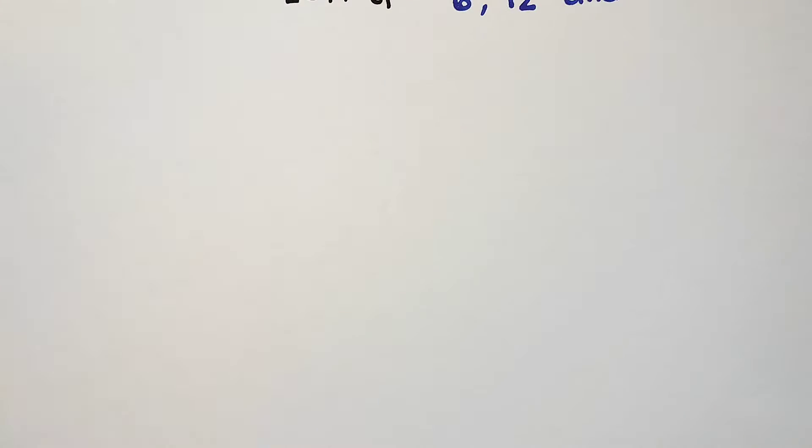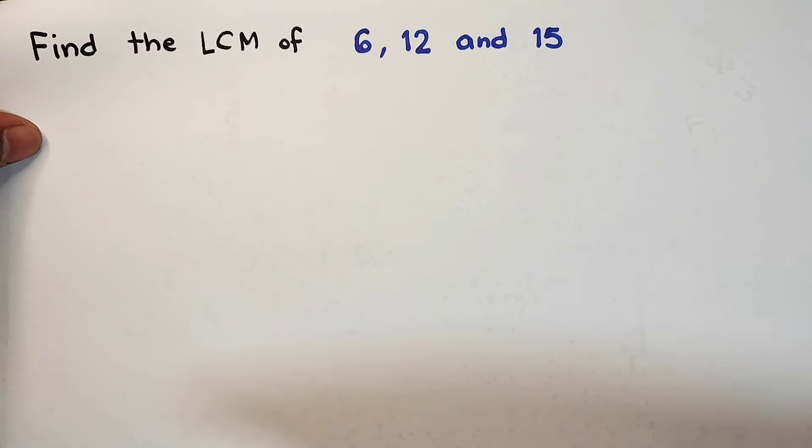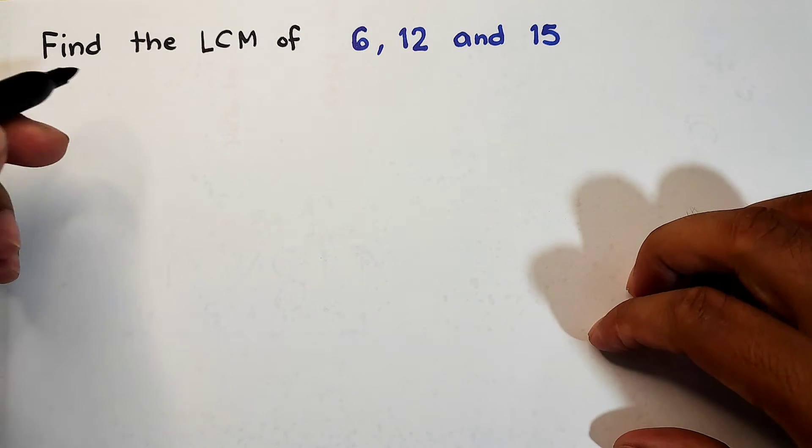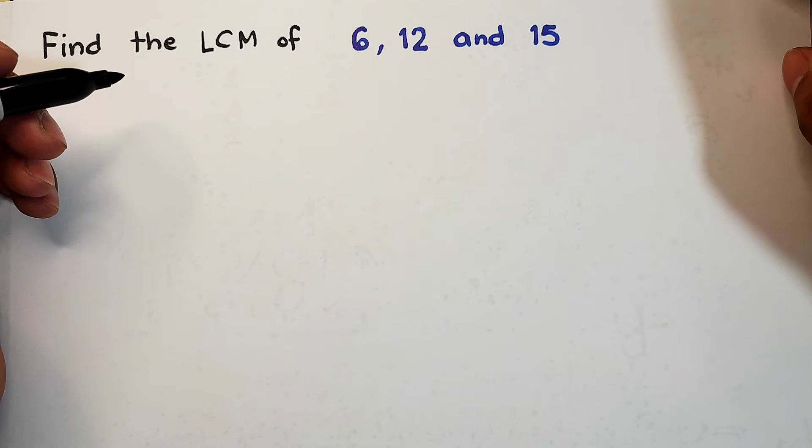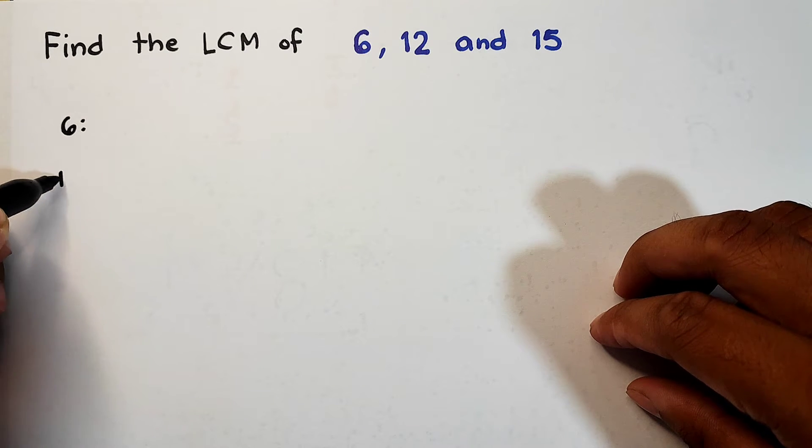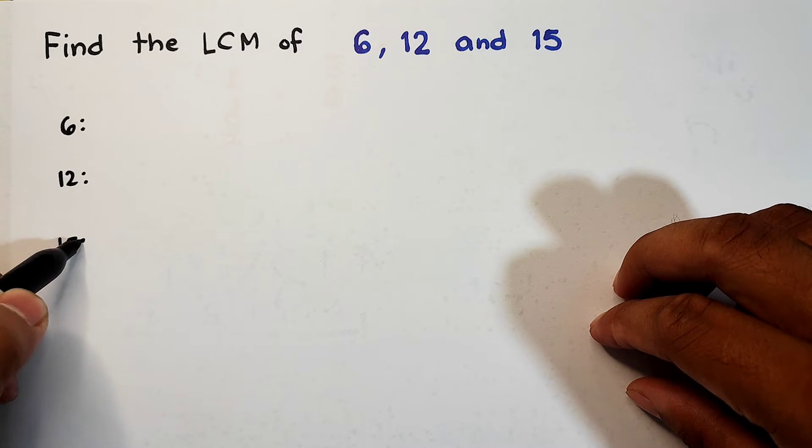So in the next part of our video, in our next example, let's have this example: find the LCM of these three numbers, 6, 12, and 15. So in this case we will be using the listing method and then we will compare it with the other method that we're going to use. Let me try using the listing method. So I'm going to put down all the multiples of 6, 12, and 15.